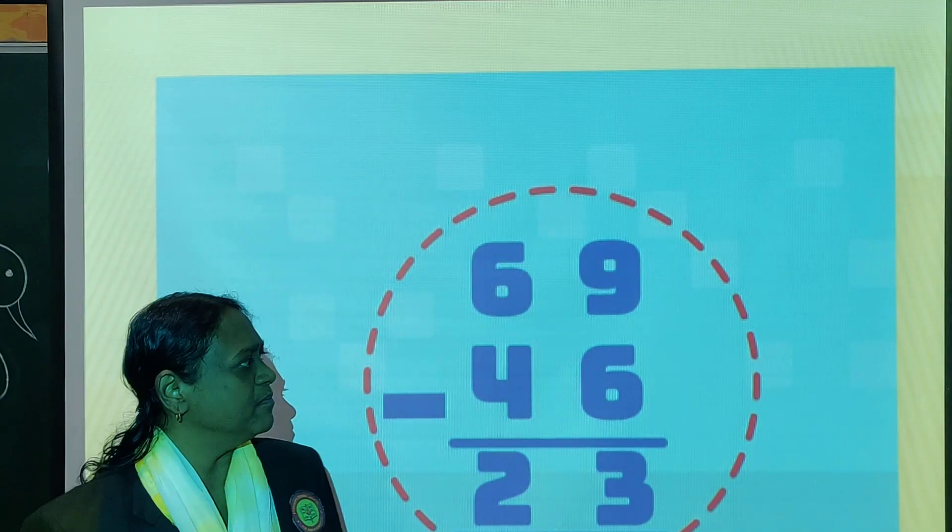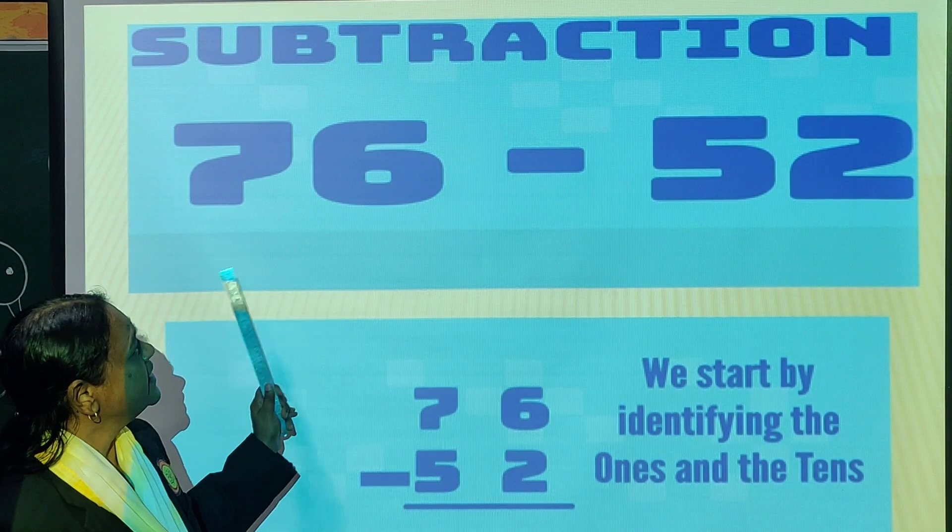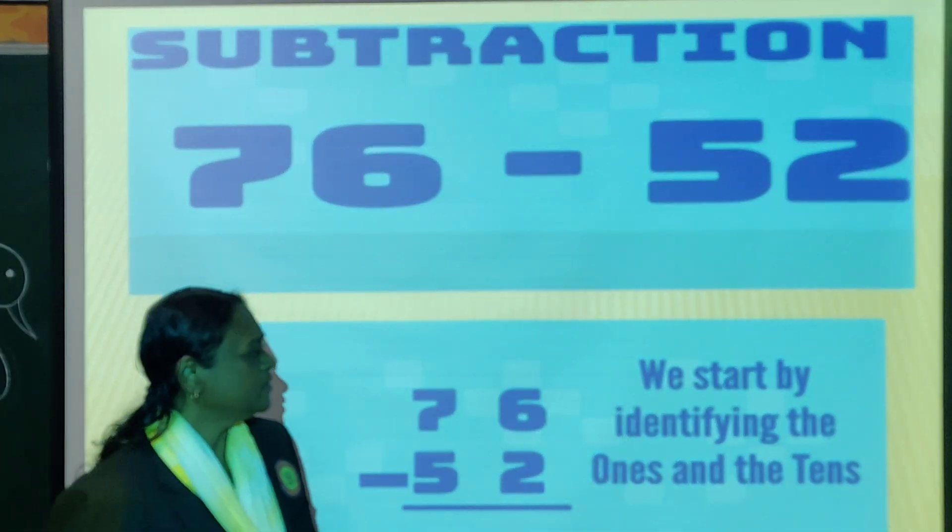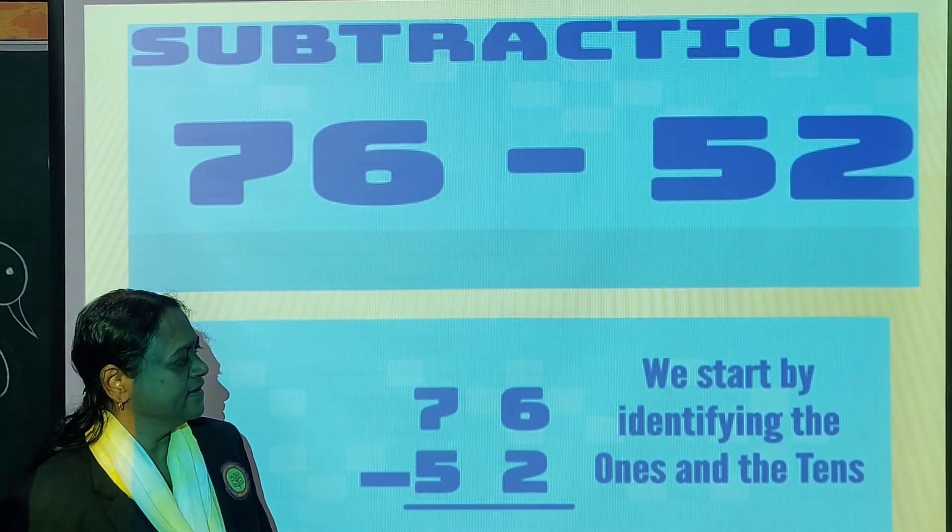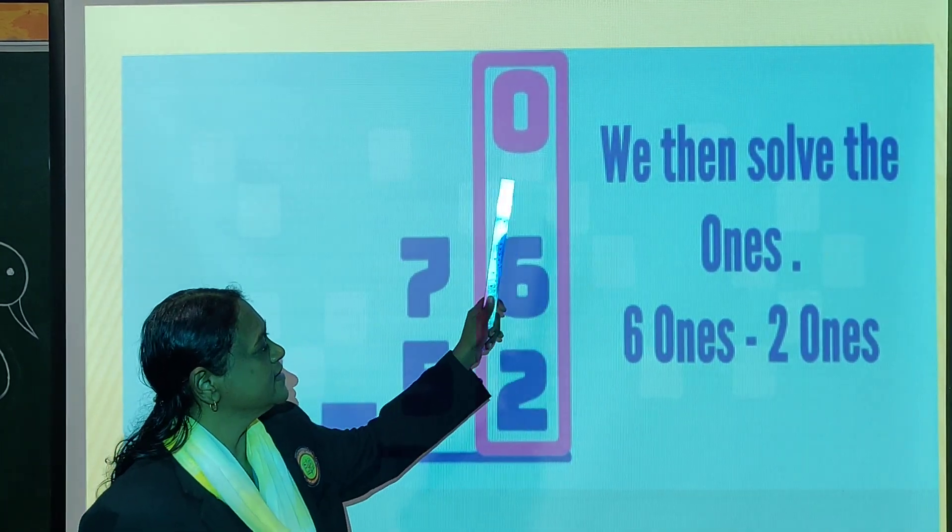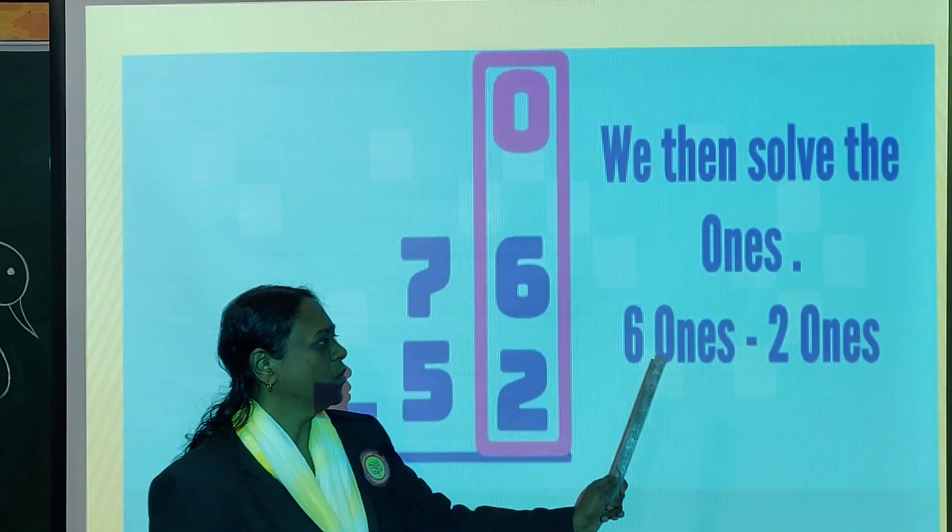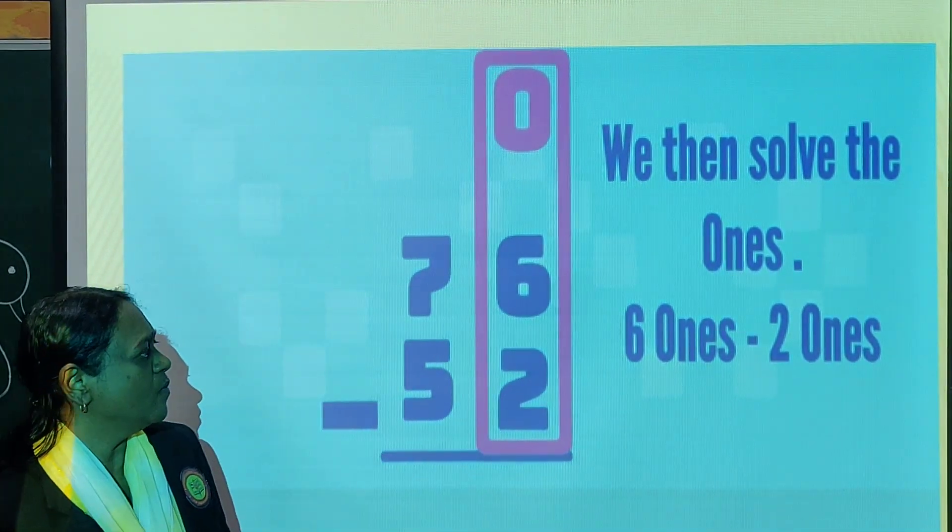Again with second example, we will see 76 minus 52. So now again we will see this is ones and this is tens. Ones, 6 minus 2. Okay, 6 ones and 2 ones. We have to minus them.